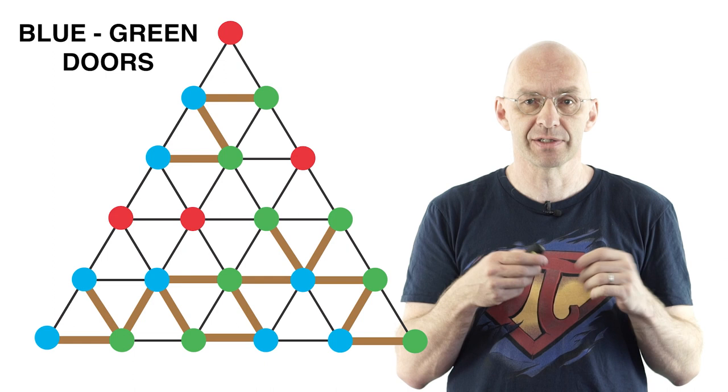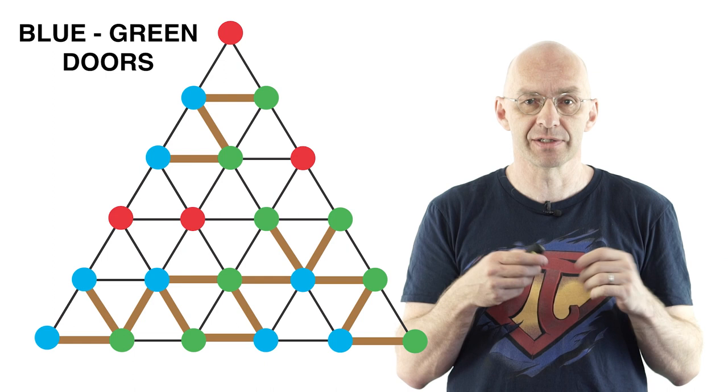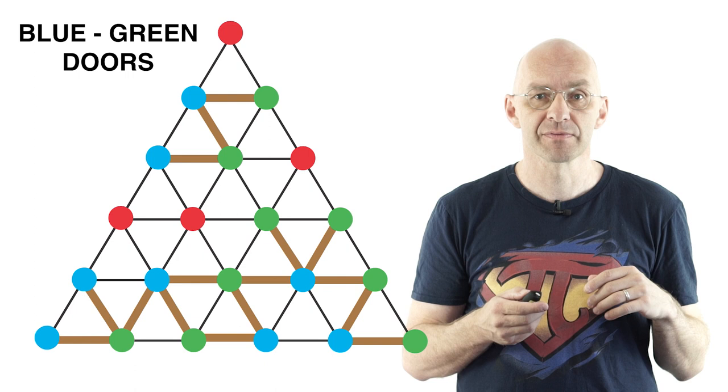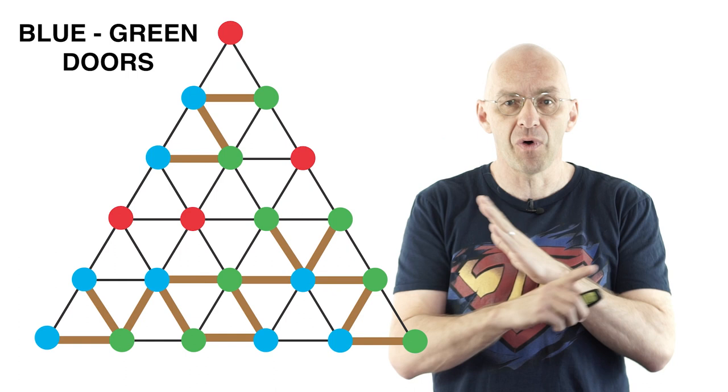Now important instead of making the blue green edges the doors we could also have chosen the red green edges or the red blue edges as doors. That would have given different sets of doors but the following argument stays the same for all these choices.